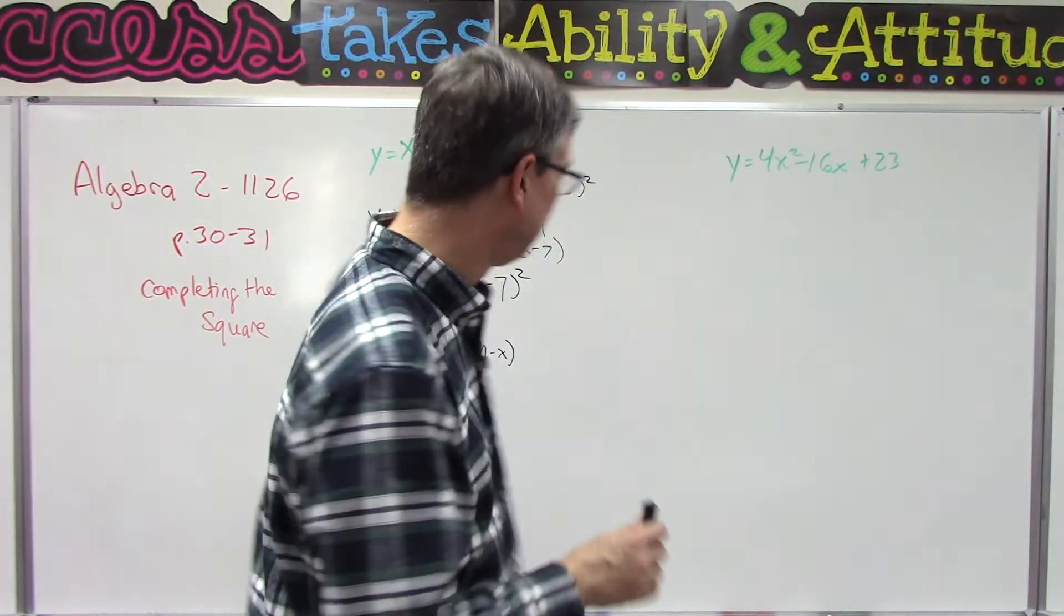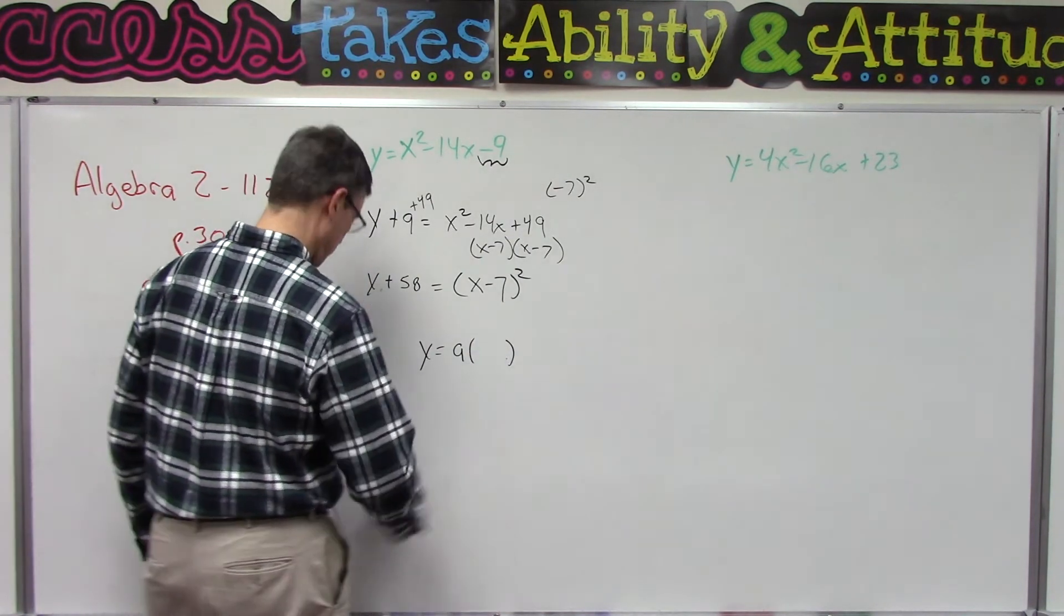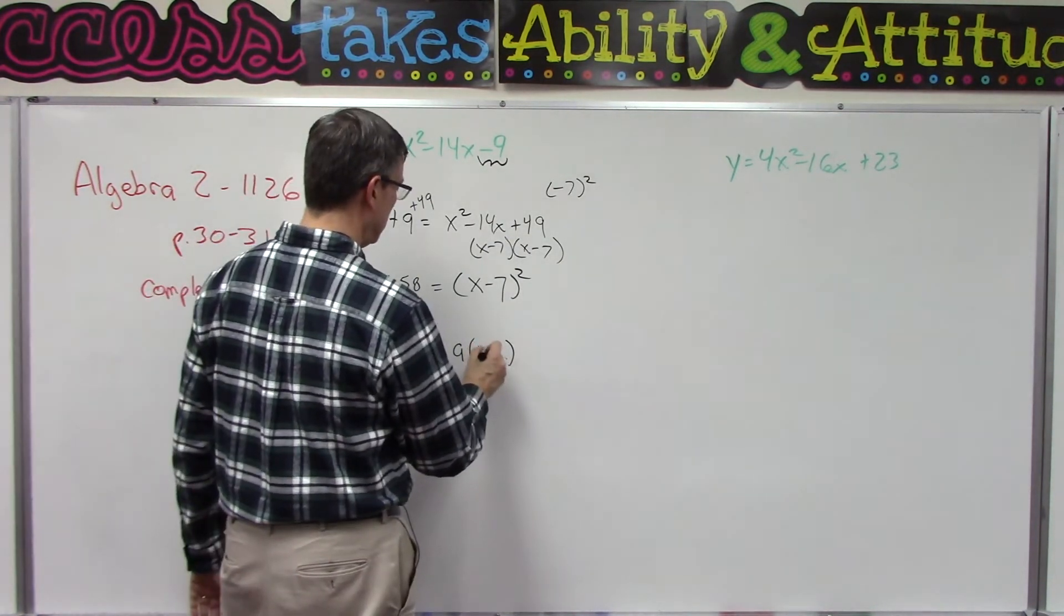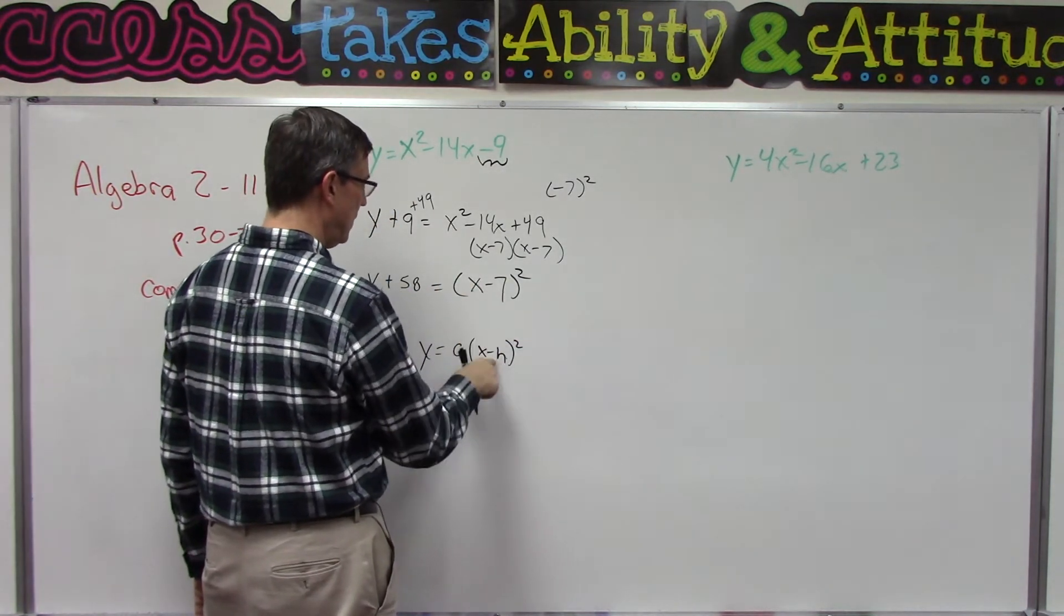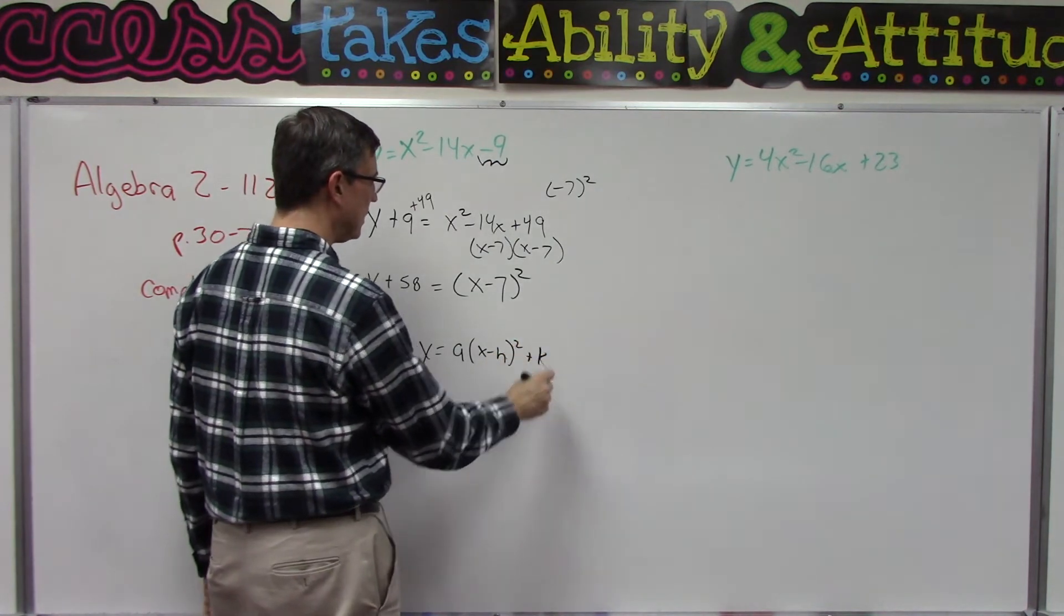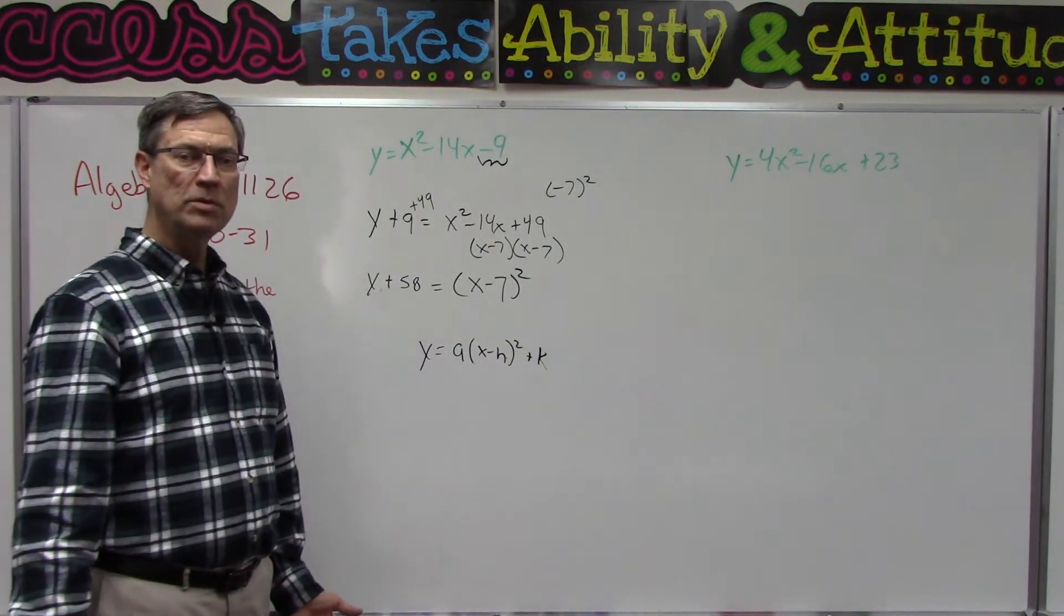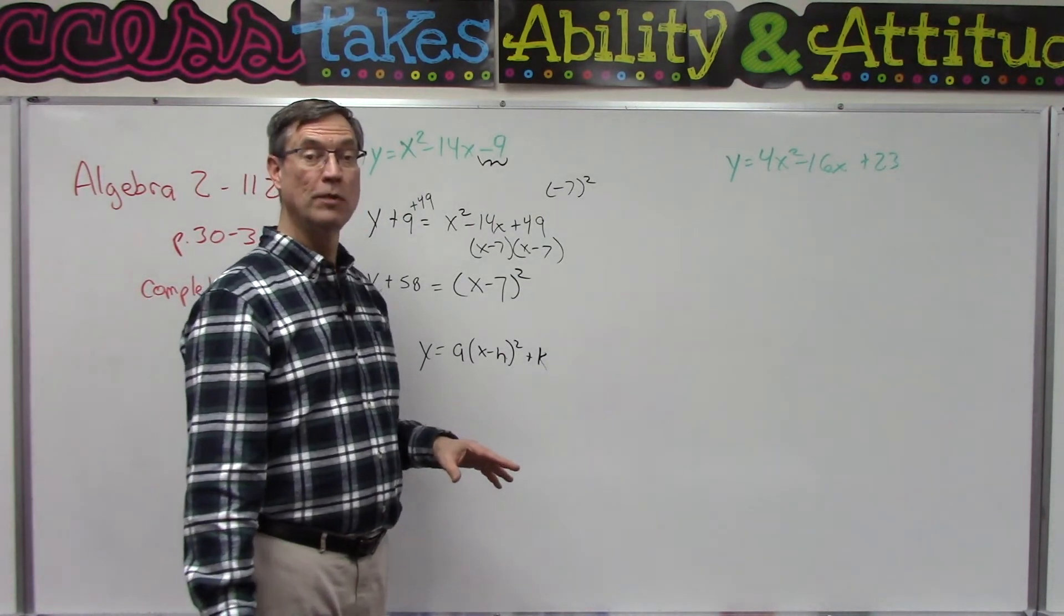I wrote that wrong, hang on. x minus h, the quantity squared. So you say x and then minus a number, quantity squared, plus k. You say, what is that? Why do they use h and k? Because a lot of the other letters we've already used for other things.